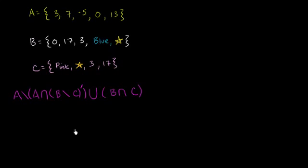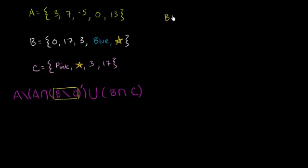Let's give it a shot. The key here is to really break it down — work on the stuff in the parentheses first, just as you would do if you were trying to parse a traditional mathematical statement, and then it should hopefully make a little bit of sense. A good place to start might be to figure out what is the relative complement of C in B, or another way of thinking about it: what is B minus C? What is B if you take out all the stuff with C in it?